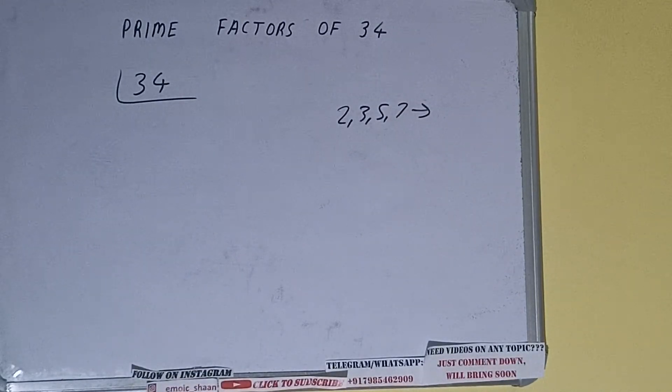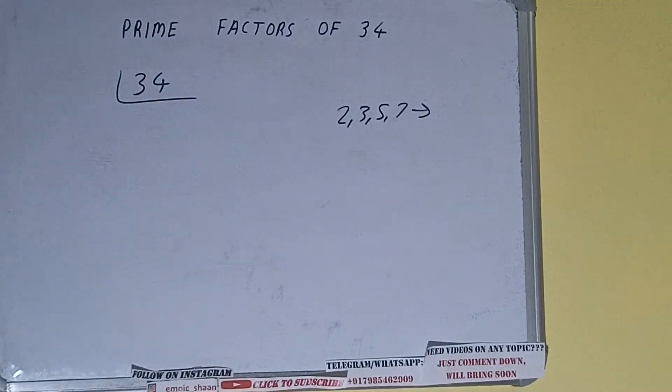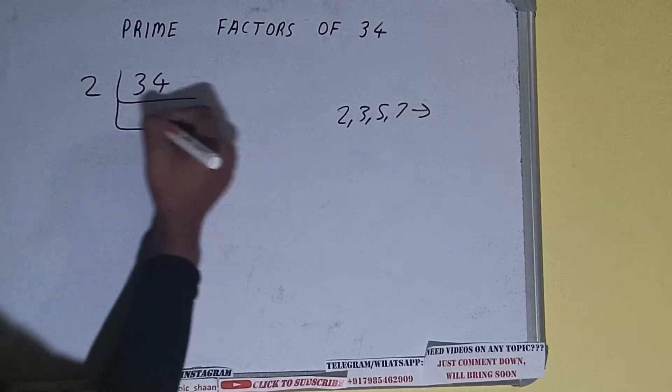So we'll check with the lowest prime number we have that is 2. Is the number 34 divisible by 2? Yes it is because the number is even and we'll be having 17.